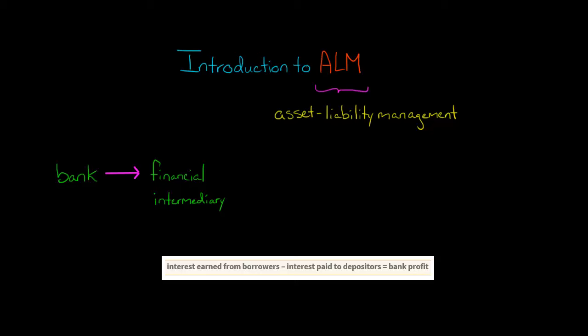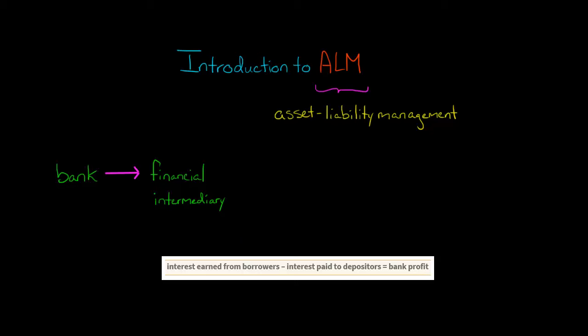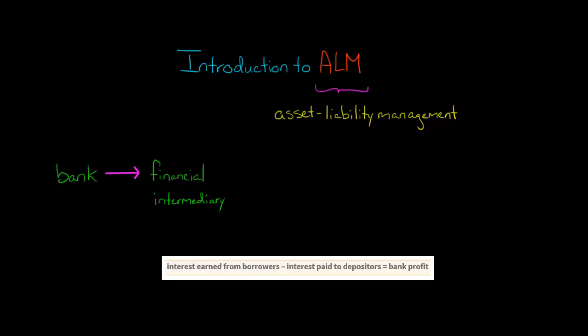If you work in banking, you've probably heard of ALM, which stands for Asset Liability Management. So what is ALM? Let's start with the basics. A bank is a financial intermediary, and it collects money from depositors to whom it pays interest, and then it loans that money out to borrowers from whom it collects interest. That's the basic historic model of a bank.